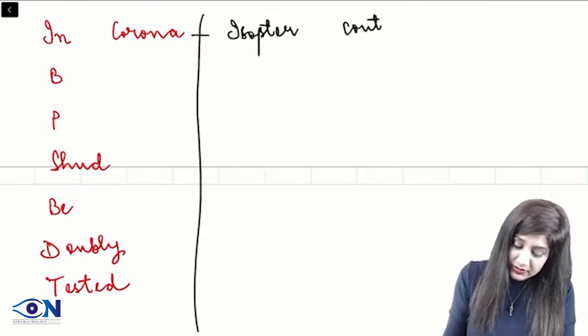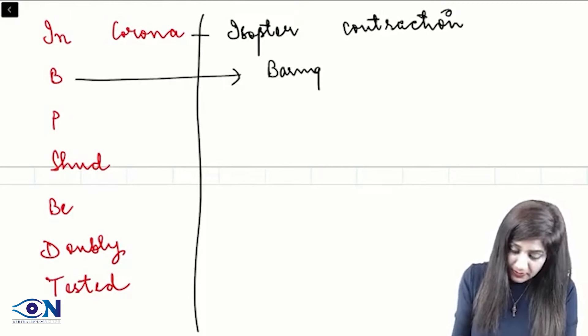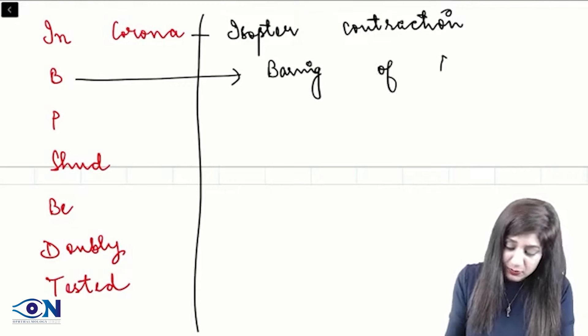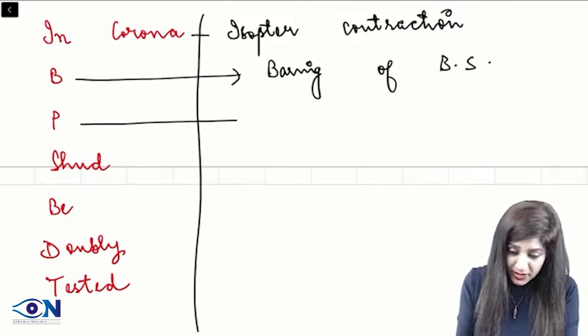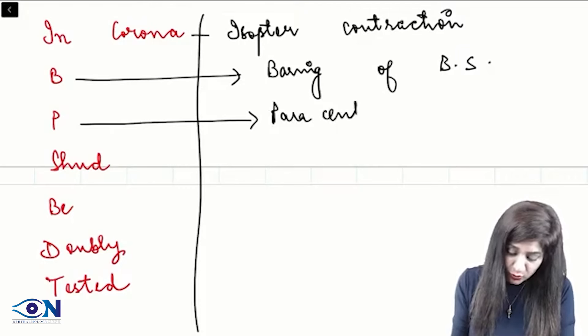First is the isopter contraction. Then we have B, B for the bearing, bearing of the blind spot. Then we have P, P for paracentral scotoma.